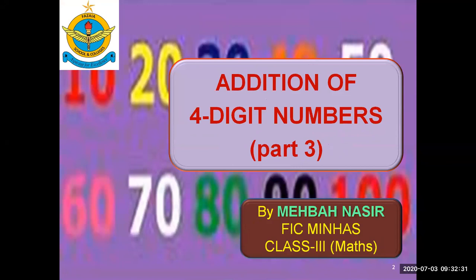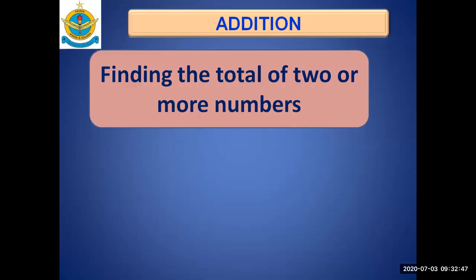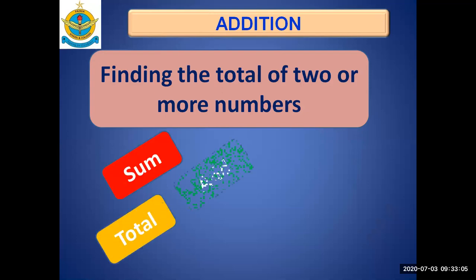It is part 3 because we have divided this topic, addition, into three parts, and this comprises your whole exercise 2A. For new students: finding the total or sum of two or more numbers is called addition. The words sum, total, add, and all together all tell us that we are doing addition.